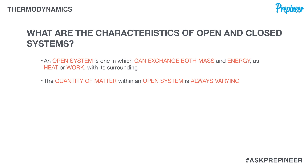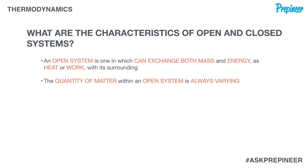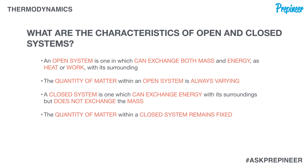A closed system, on the other hand, is one that can exchange energy with its surroundings but does not exchange mass. The quantity of matter within the system remains fixed, and the system is described as a control mass system.